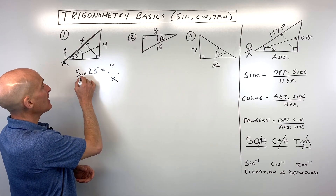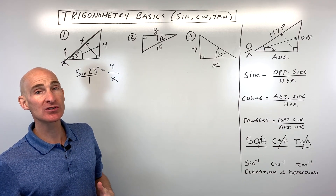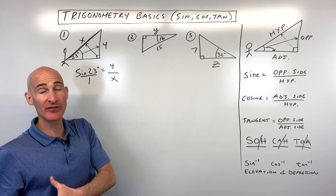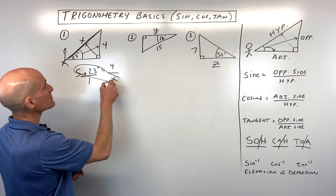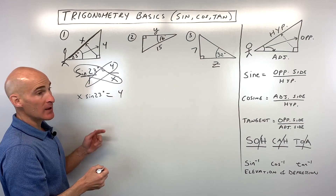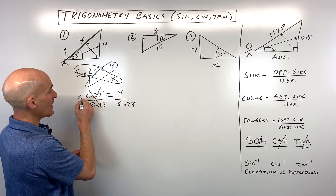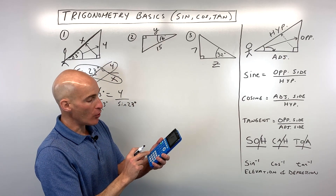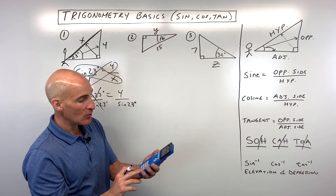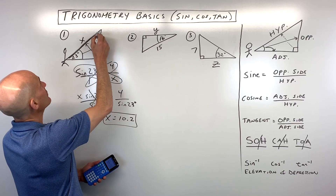We can think of this as sine of 23 over one, giving us a proportion — a fraction equal to a fraction. Using the cross product property, x times the sine of 23 equals four. Then divide both sides by sine of 23 to isolate x. On the calculator, make sure you're in degrees mode. Four divided by sine of 23 degrees comes out to about 10.2 — that's the length of the hypotenuse.